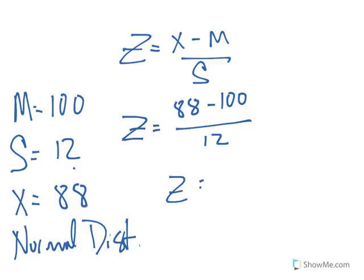The z score in this case is equal to 88 minus 100, which gives us negative 12. I think I did that right. Negative 12 divided by 12. The z score is equal to negative 1. Now we go to our table.